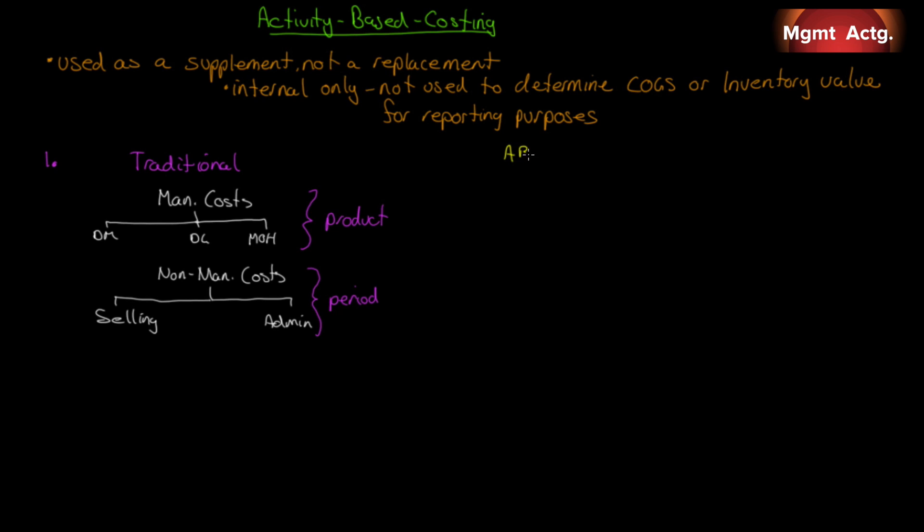Well, ABC doesn't do that. ABC says both can be product costs. That's step one. Both can be. In other words, some of these non-manufacturing costs, ABC argues that,